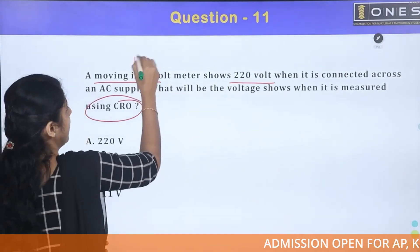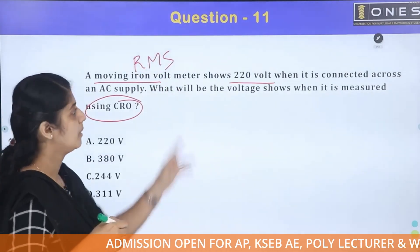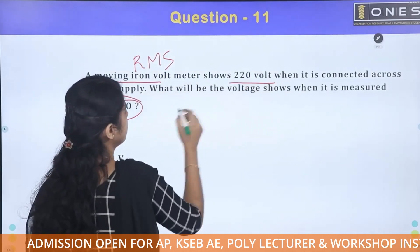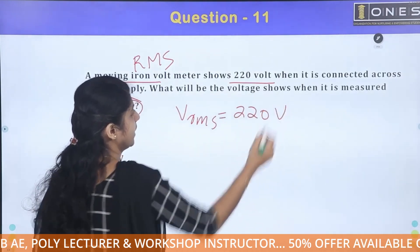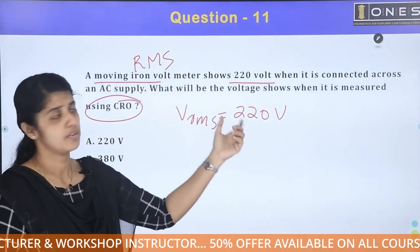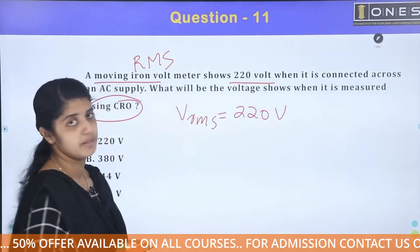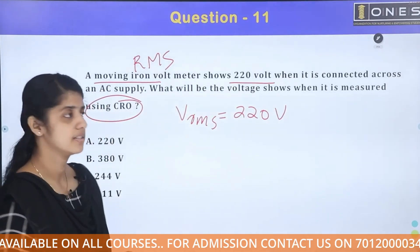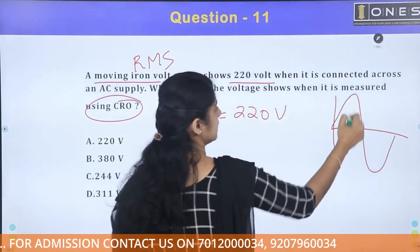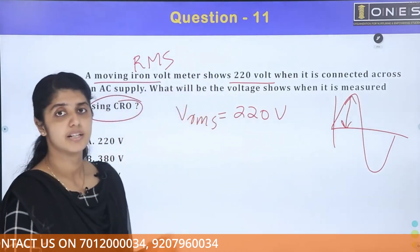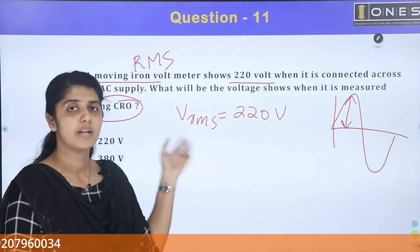What value does the AC meter read? It reads the RMS value — so 220 volt is the RMS value. Now, when we measure using a CRO, the CRO measures the peak value of the voltage.